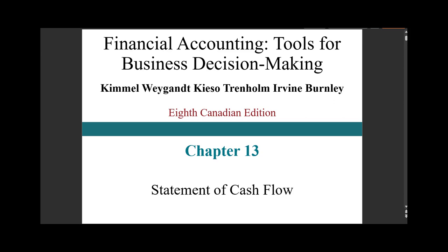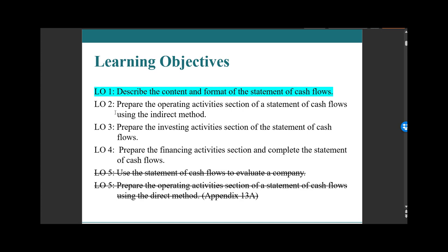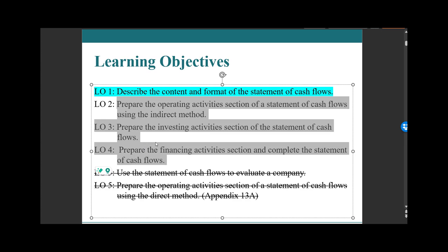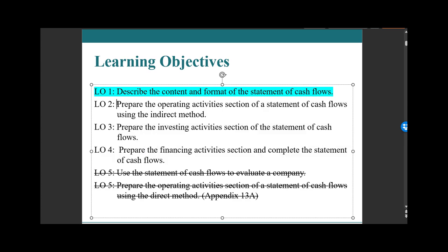So this chapter answers: where did the money go? We have four learning objectives, but this is going to be done a little differently. In the past, we did one video for each learning objective. However, this video covers describing the content and format of the statement of cash flow — essentially what is the statement, how do we use it, what do we expect — and then Learning Objectives 2, 3, and 4 covering operating, investing, and financing will be in the next video.